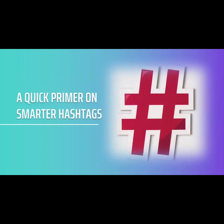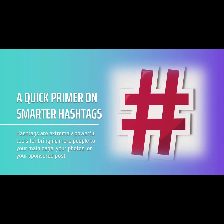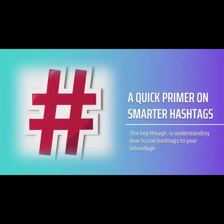A quick primer on smarter hashtags: hashtags are extremely powerful tools for bringing more people to your main page, your photos, or your sponsored post. A hashtag simply tells Instagram what a photo is about, which in turn means it can categorize it and let people search for it. The fact that you can now add hashtags to stories is somewhat game-changing. The key is understanding how to use hashtags to your advantage. A mistake is to presume that the best hashtag is the most popular one — the most popular Instagram tag is in fact 'love.' Using popular hashtags means your post gets buried before it has any chance to shine. Conversely, you don't want to choose a hashtag that no one is looking for either.